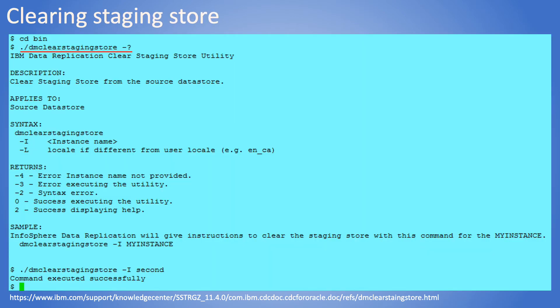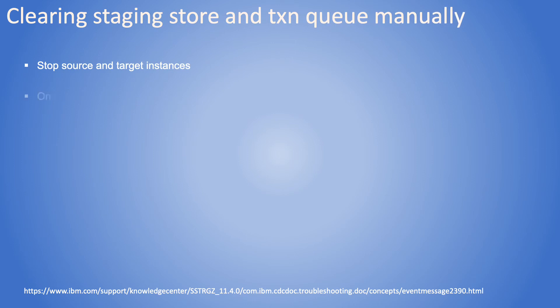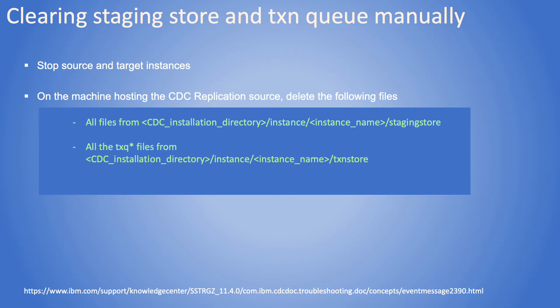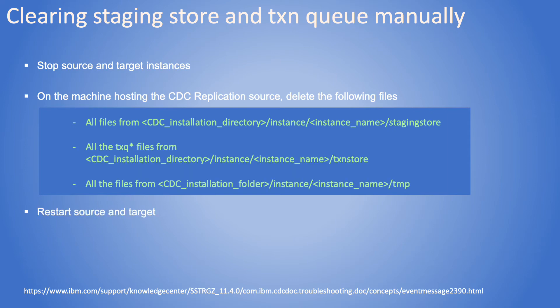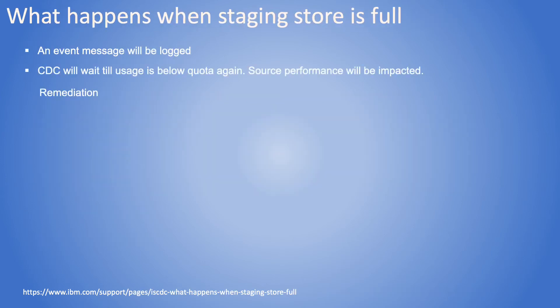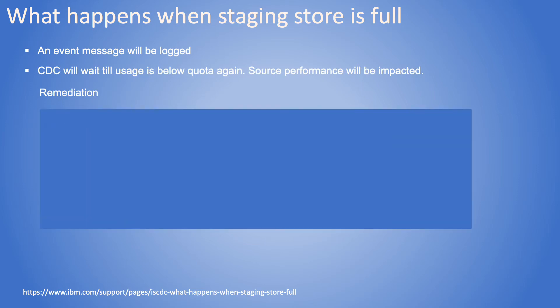There are occasions when we might need to clear the staging store. It can be done using the dm clear staging store command. We can also clear the working folders manually, which is equivalent to running the dm clear staging store command. CDC will stall if the staging store is full, and measures will have to be taken to clear it.